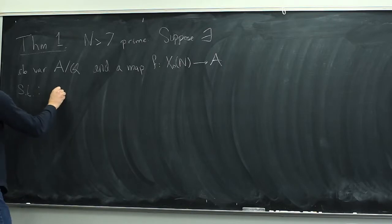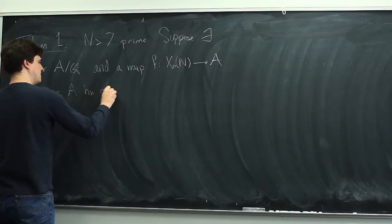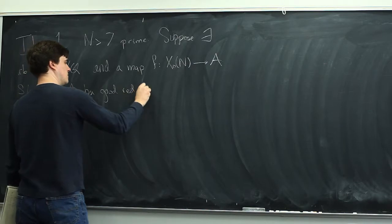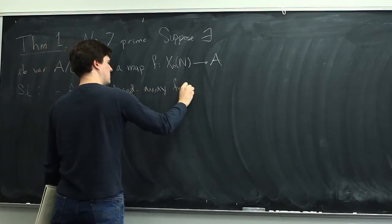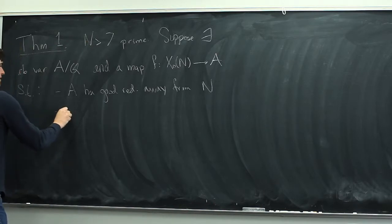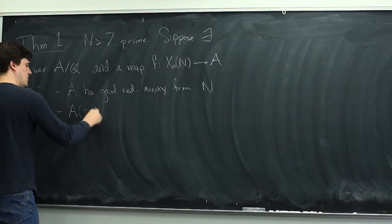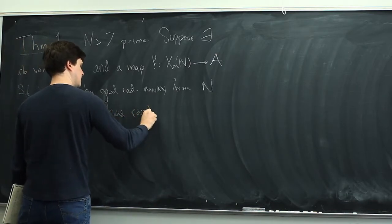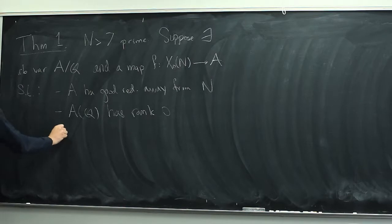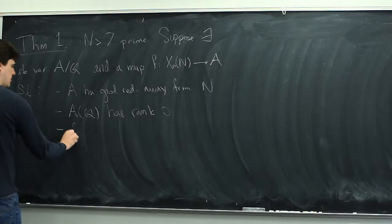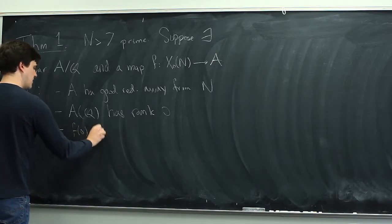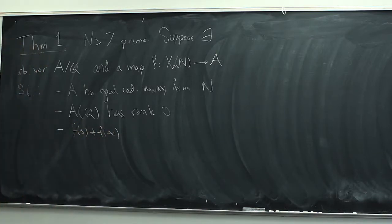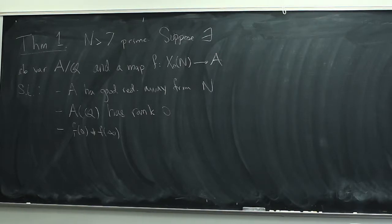First, A has good reduction away from n. Second, A has rank 0 — the Mordell-Weil group of A over Q has rank 0. Third, f separates the two cusps of X_0(n), i.e., f(0) is not equal to f(infinity). The conclusion is that no elliptic curve over Q has a rational point of order n.